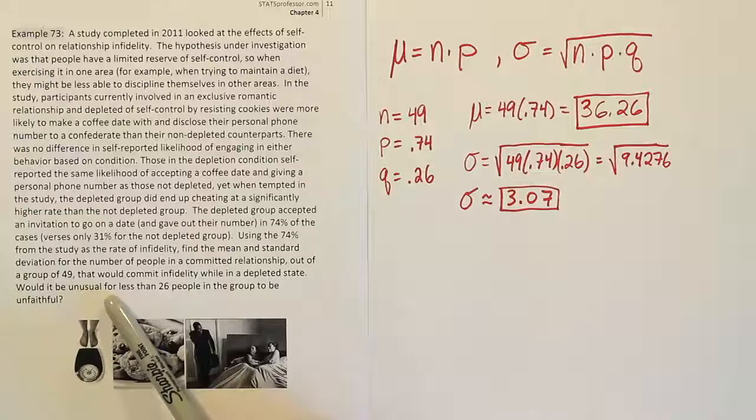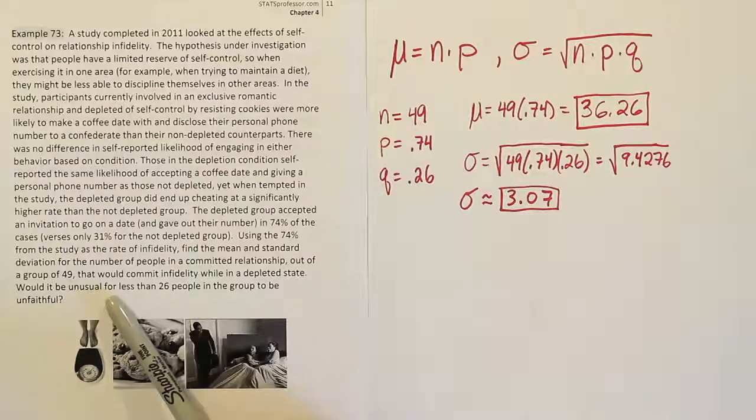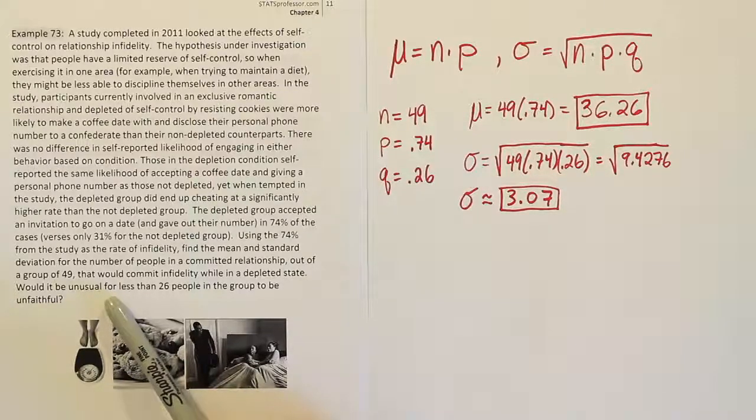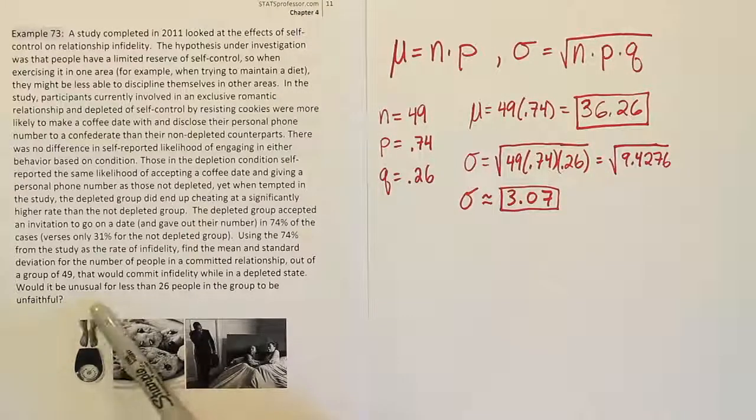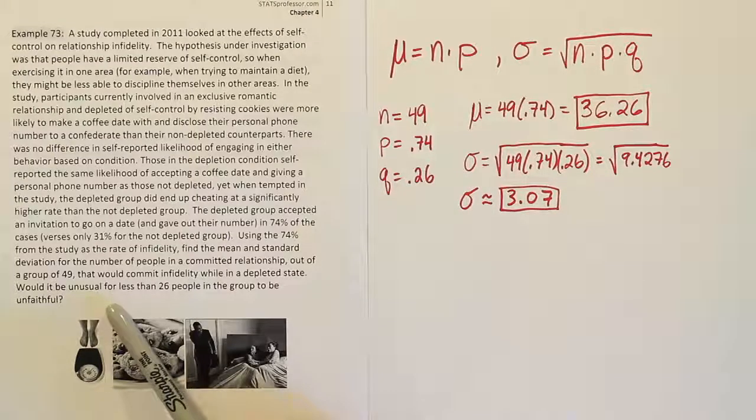You could calculate the z-score and see where that z-score lies. If it's like, for example, if the z-score was a negative 2.8, we'd say that's probably unusual because it's below negative 2, right? If it was a high number like 3.1, we'd say that's unusual because it's above 3 or above positive 2, right? So that's one way to do the problem, calculate the z-score.